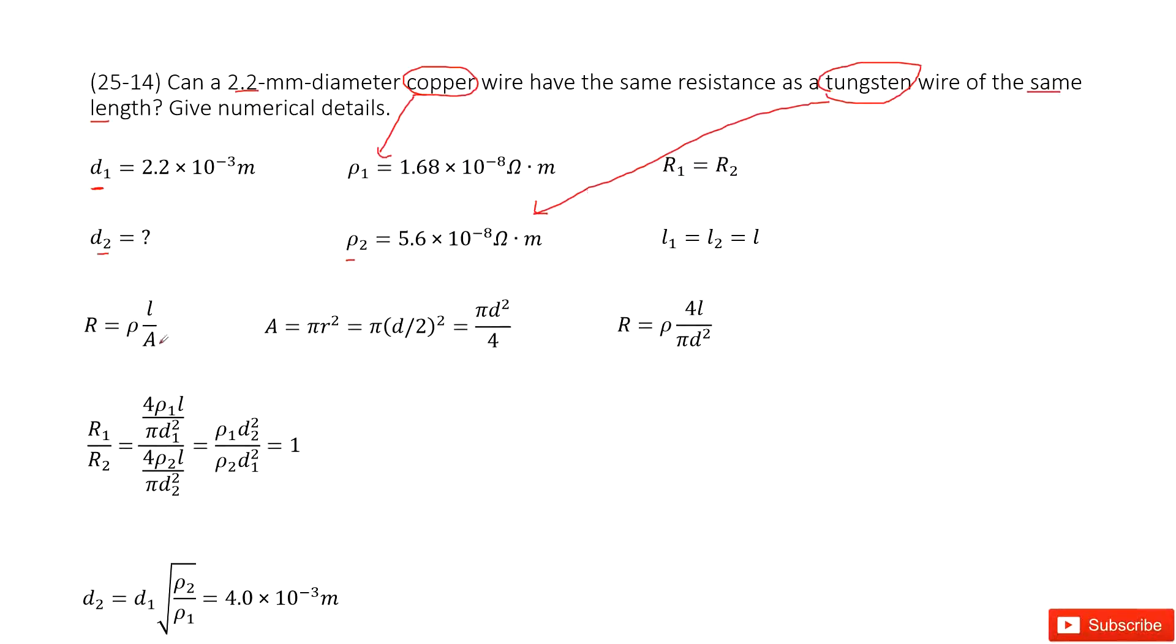We can consider the equation: resistance equals resistivity times the length divided by cross-sectional area. And this A can be connected with the diameter D.